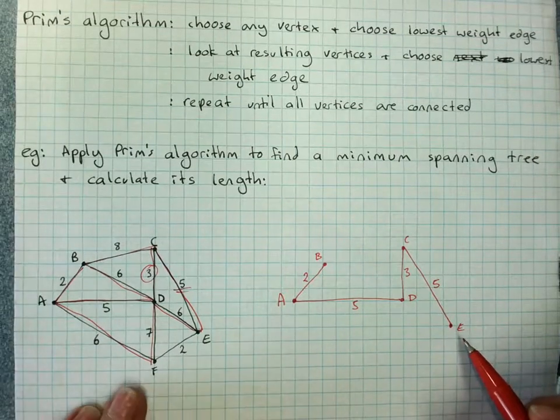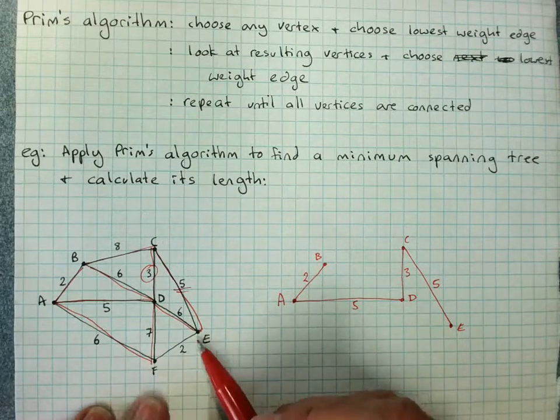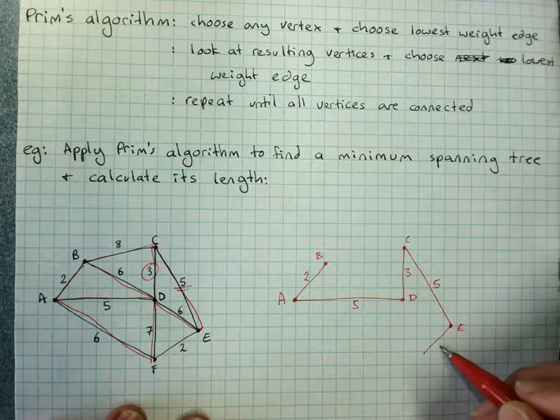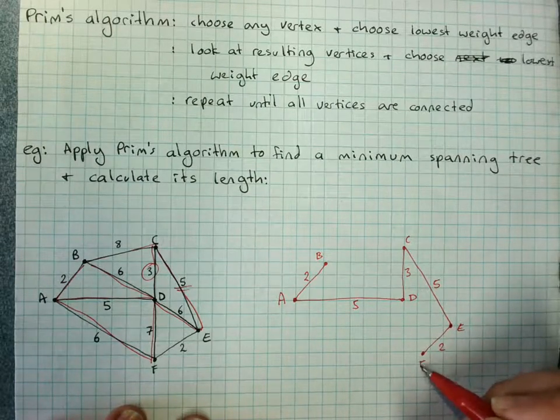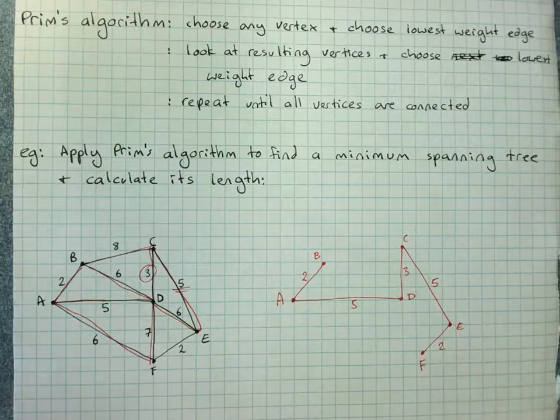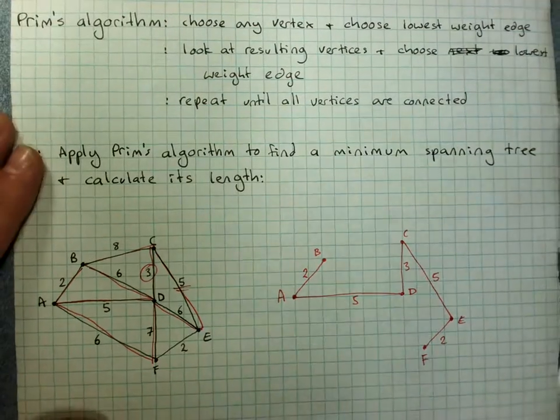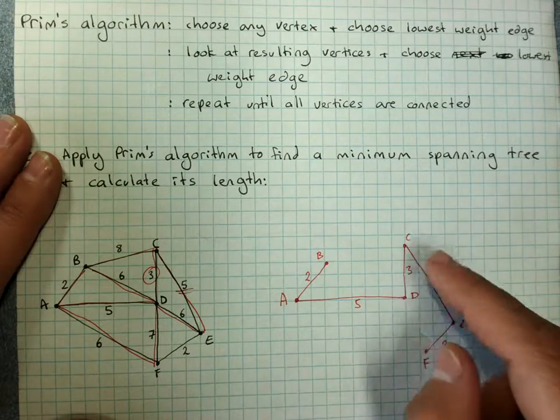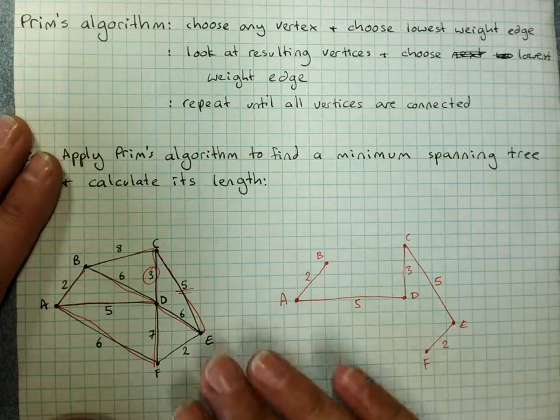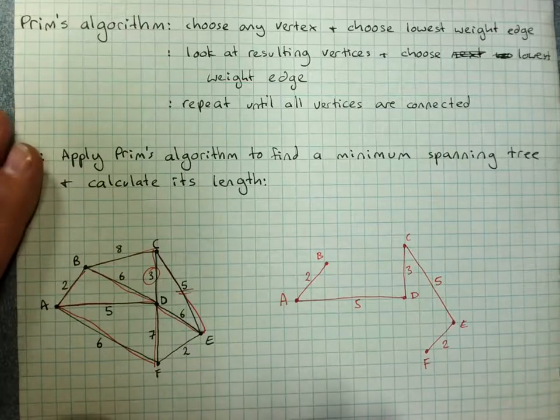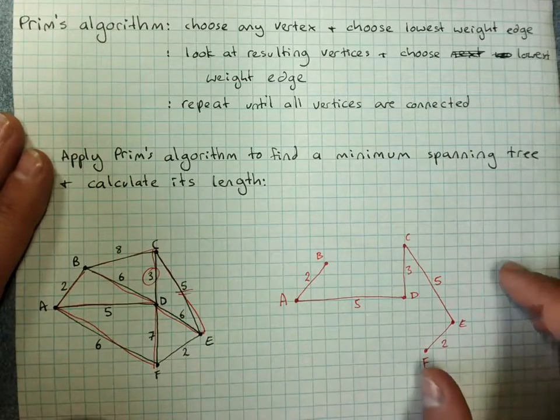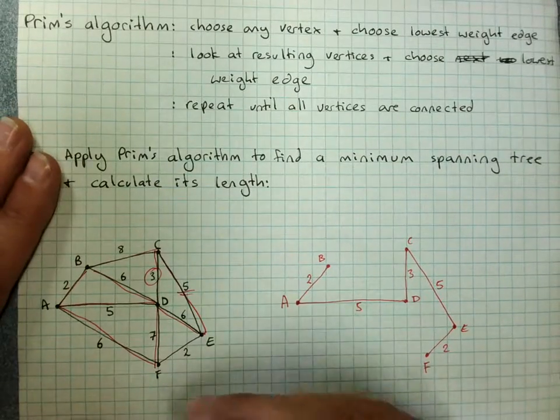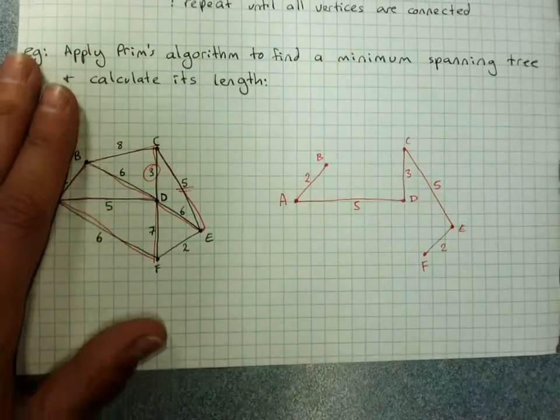We still haven't got everything, so we don't have F. And obviously the lowest weighted edge to get us to F is this one here at 2. So it's quite an easy algorithm to follow, an algorithm just being a process for how we get an answer. And that's found the shortest distance to join all the vertices in that graph. So it might not be the obvious one when you look at it as to how you would obviously join up everything with the shortest distance. But there it is.